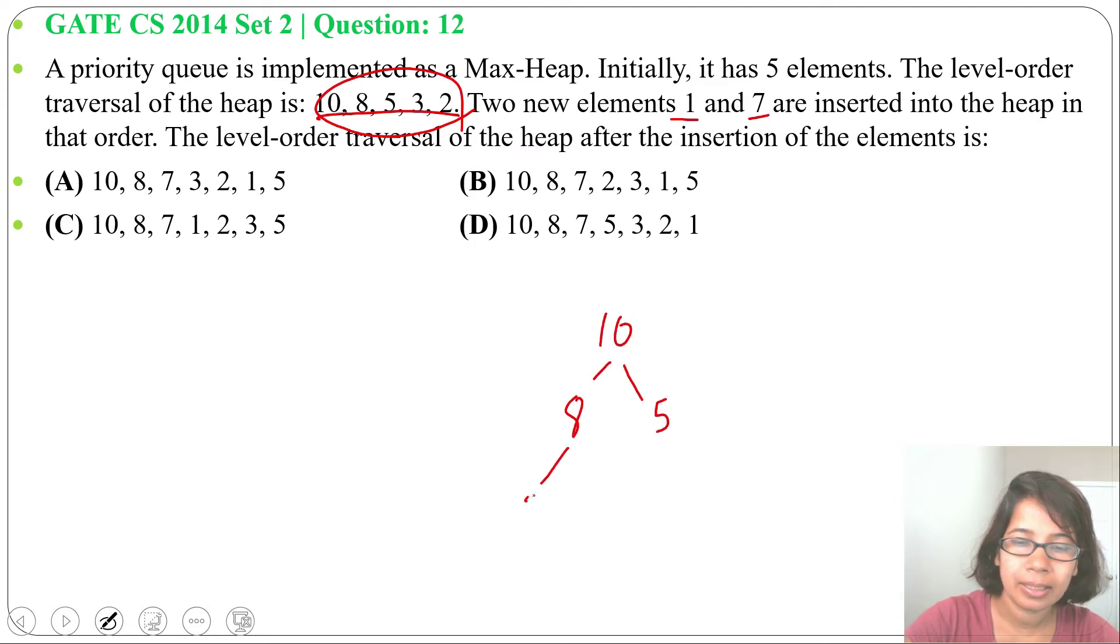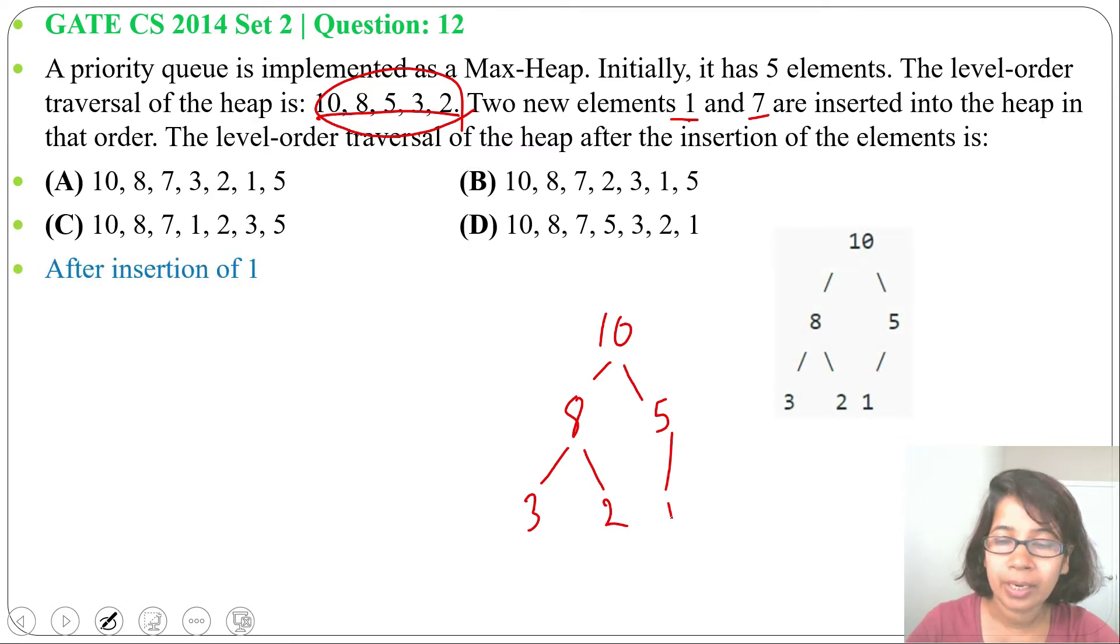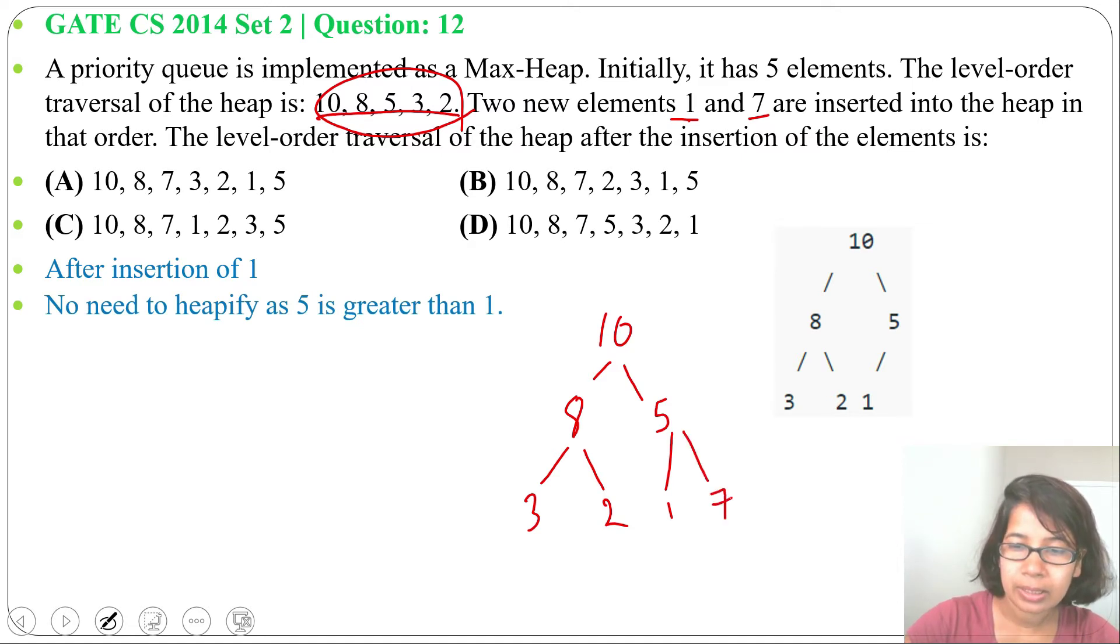Next we'll insert 1. 1 will insert here. After insertion of 1, we don't need to heapify as 5 is greater than 1. Next we'll insert 7. We'll insert 7 here.